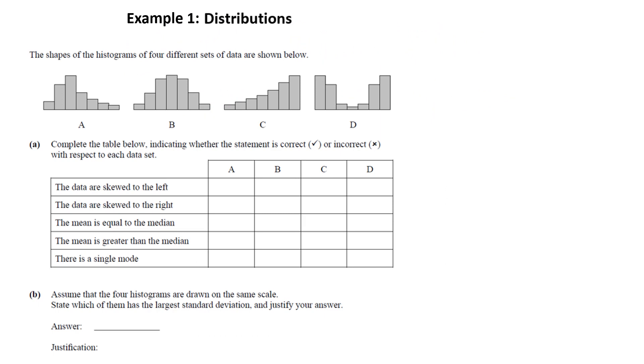Example 5.1 distributions. The shapes of the histograms of four different data sets are shown below. Complete the table below indicating whether the statement is correct or incorrect with respect to each data set. The data is skewed to the left, so left means a tail to the left. So A has its tail to the right, so that is skewed to the right. B is symmetrical, C is skewed to the left and D is symmetrical.